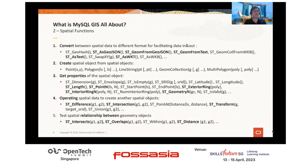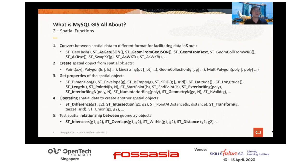For example, ST_GeomFromText can convert well-known text into geometric spatial data. Well-known text is a kind of syntax to specify the shape of an object, like a line, point, polygon, or multiple polygons. And we can use ST_AsText to convert geometric data back to text, so we can understand the content of the data and interact with the rest of the database. This allows you to import and export spatial data between the database and outside systems.